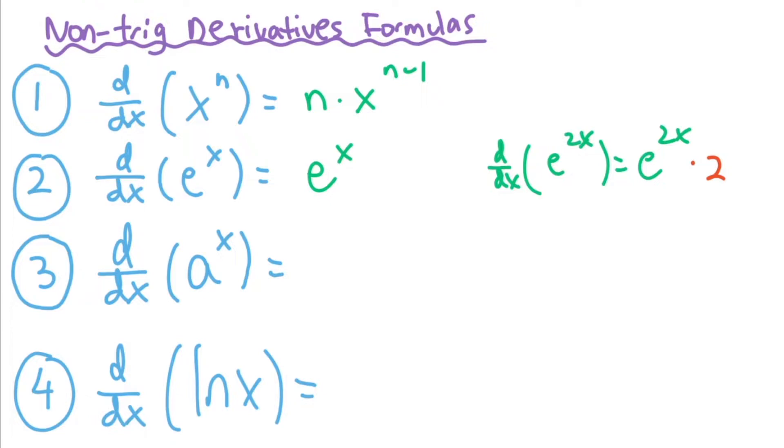So next, we see a to the x. Just memorize this. It's going to be natural log of a times a to the x. And then natural log of x, the derivative of that is just going to be 1 over x.